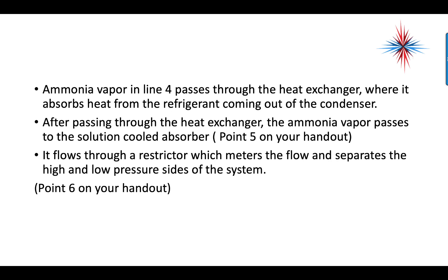Ammonia vapor in line four passes through the heat exchanger where it absorbs heat from the refrigerant coming out of the condenser. After passing through the heat exchanger, the ammonia vapor passes through the solution-cooled absorber at point five, flowing through the restrictor which meters the flow and separates the high and low pressure sides of the system.